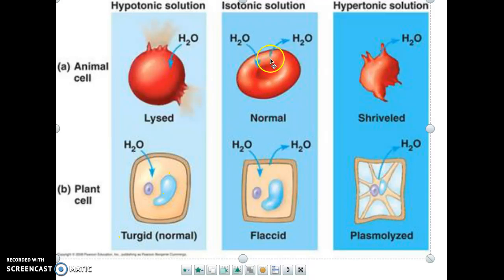Starting in the middle, an isotonic solution — an isotonic environment just means that the outside of the cell has the same concentration of water and solute as the inside of the cell. Water is constantly going in and out at an equivalent rate, so the overall shape of this red blood cell wouldn't change. That's the normal shape of a red blood cell — a little concave indentation on the cell.